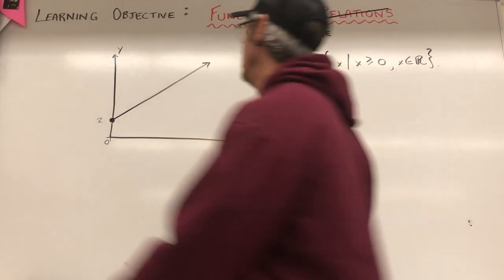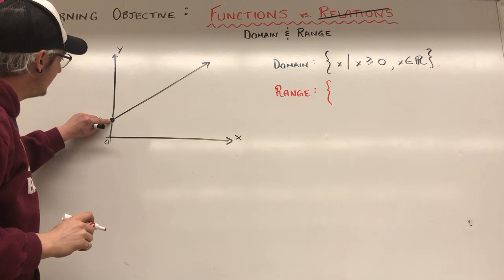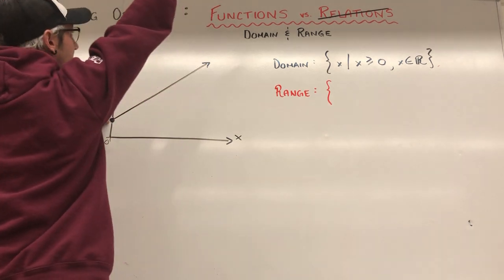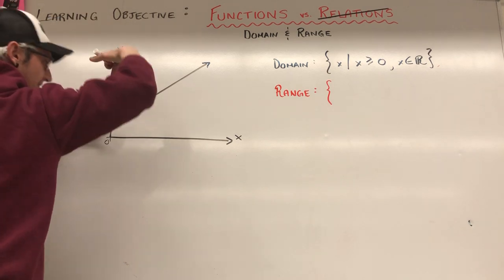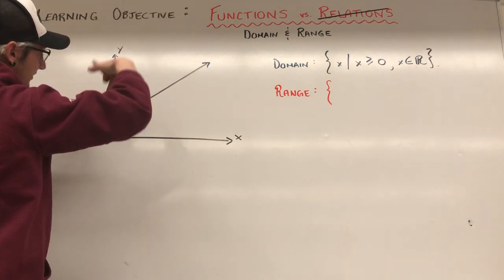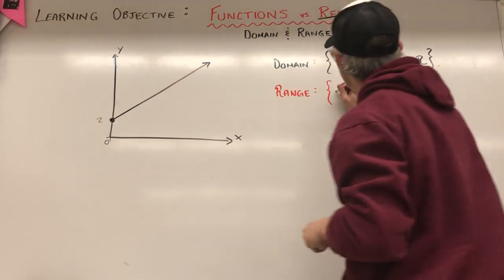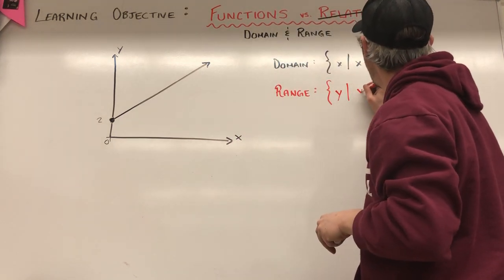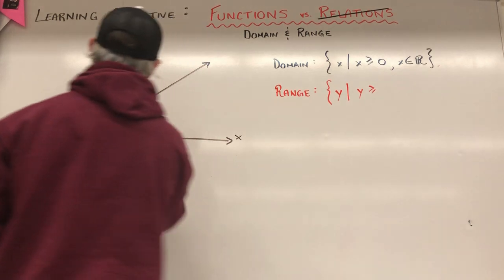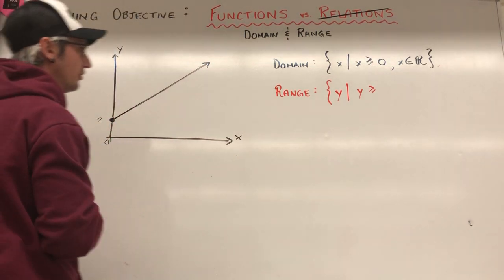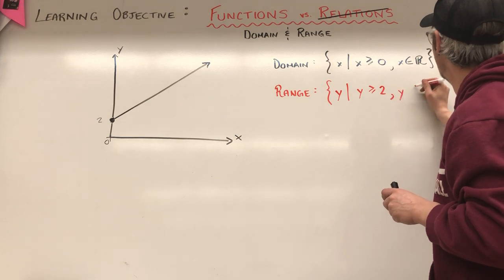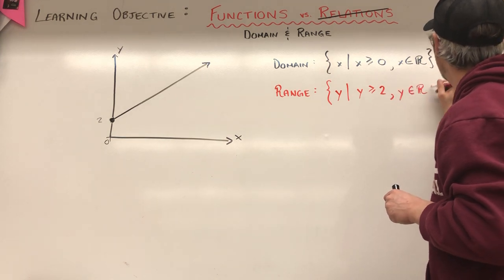For the range of that graph, since it starts at y equals two and goes upward infinitely, the range is: y such that y is greater than or equal to two — the dot is filled in so it can equal two — and y is an element of the real numbers.